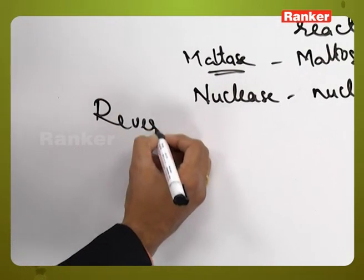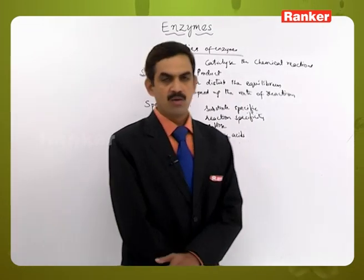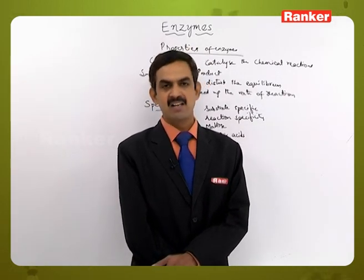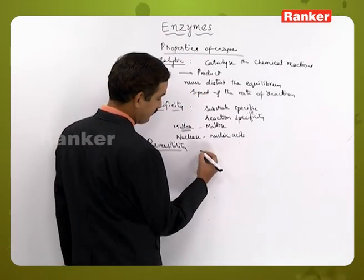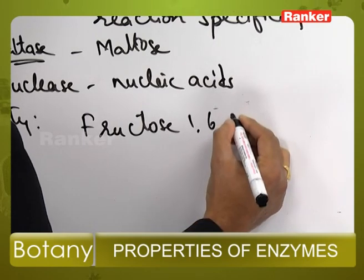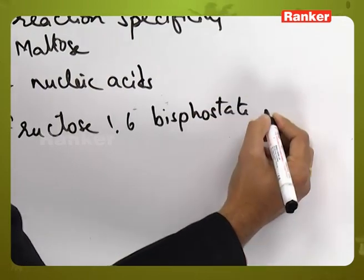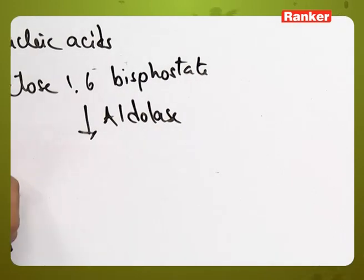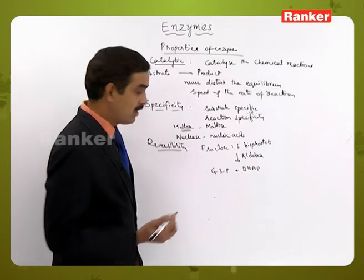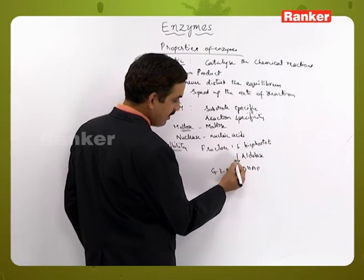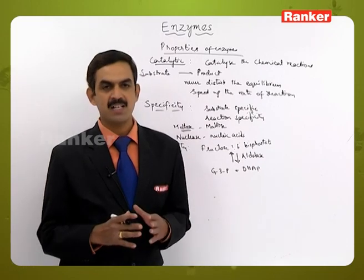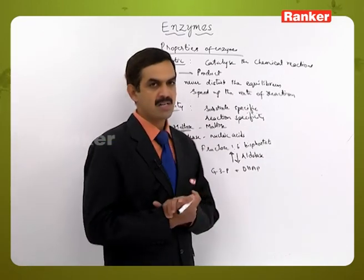The next property is reversibility. Some enzymes participate in reactions where they catalyze the reaction in a reversible manner. For example, fructose 1,6-bisphosphate — the enzyme aldolase acts on it and converts it into glyceraldehyde 3-phosphate and dihydroxyacetone phosphate. The same aldolase enzyme also helps convert those two compounds back into fructose 1,6-bisphosphate. This is the property of reversibility.